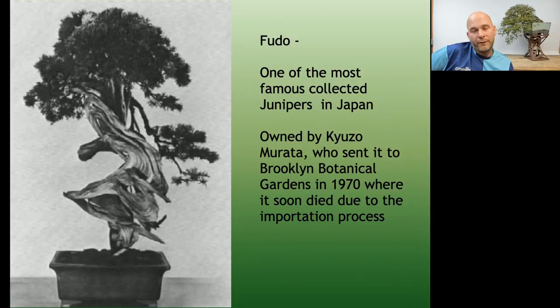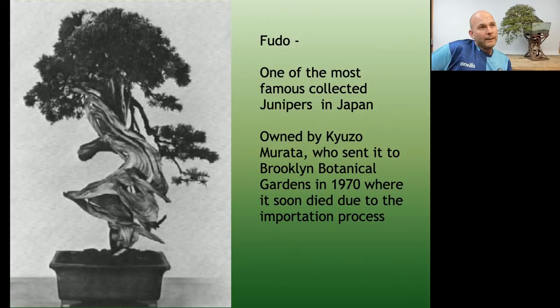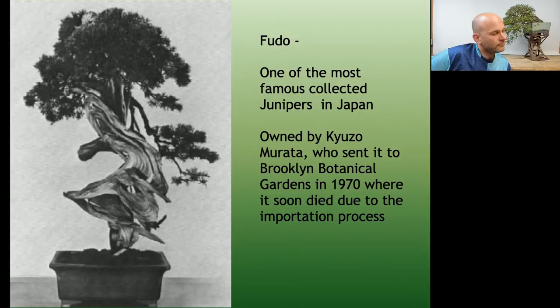This very famous tree is called Fudo, and it was one of the most famous collected junipers in all of Japan. There's some history about it online — search 'Fudo bonsai juniper.' It was collected in the early 20th century when juniper collecting, yamadori, was being practiced and perfected. It went through a number of different collectors and ended up being owned by Kyuzan Murata, a very famous bonsai artist.